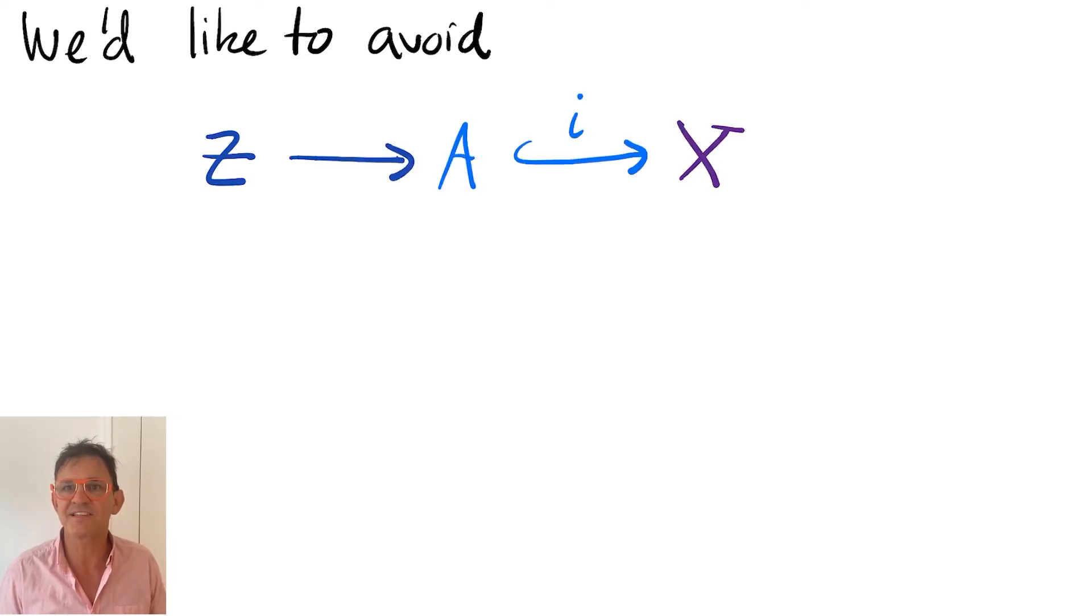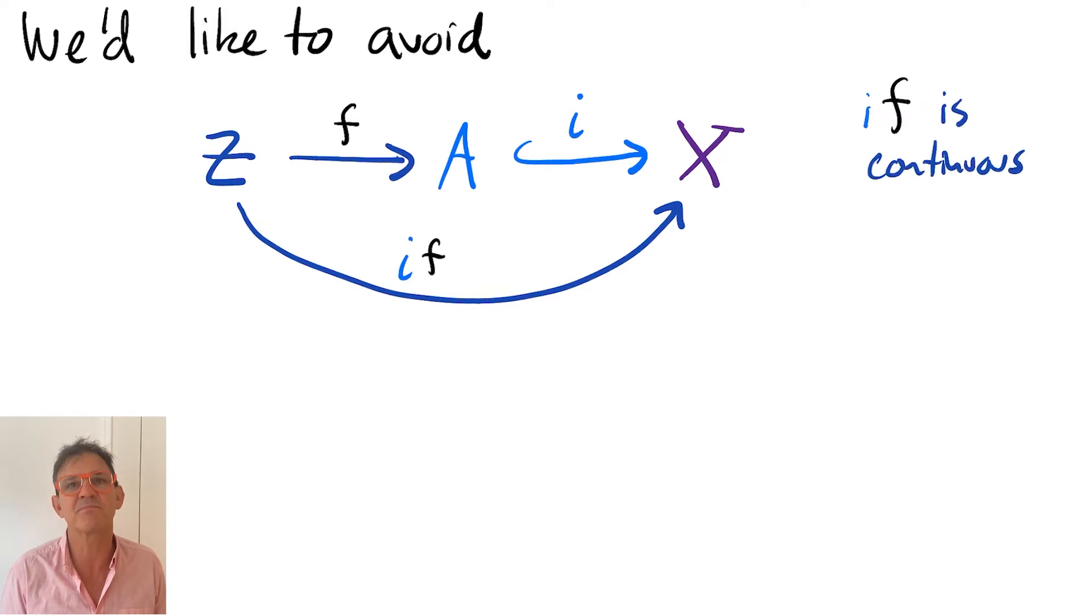We want to avoid topologies on A, for which there exists a discontinuous function from a space Z to A, which becomes continuous after post-composing with the natural inclusion of A into X.